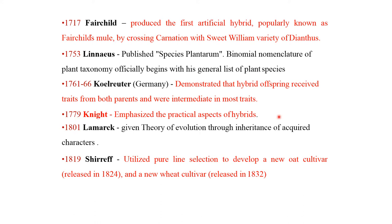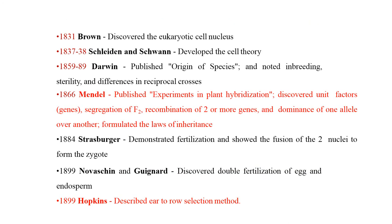In 1819, Knight emphasized the practical aspect of hybrids. In 1819, pure line selection was utilized to develop a new oat cultivar released in 1824. A new wheat variety was released in 1832. In 1866, Mendel published his experiments in plant hybridization.